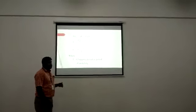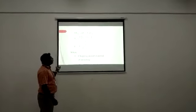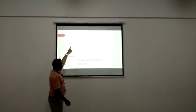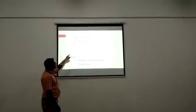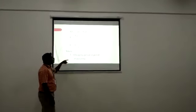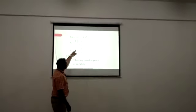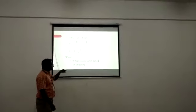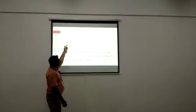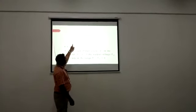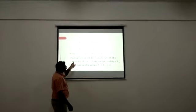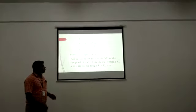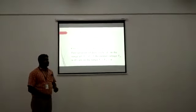Since there are no losses, we equate the energy stored during on-time to the energy released during off-time: Vs × I × Ton = (V0 − Vs) × I × Toff. Rearranging, V0 = Vs × (Ton + Toff) / Toff. Since Ton + Toff = T and Toff = T − Ton, dividing numerator and denominator by T gives: V0 = Vs / (1 − Ton/T). Since Ton/T is the duty cycle D, the output voltage is V0 = Vs / (1 − D), where D varies from 0 to 1.